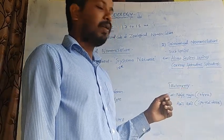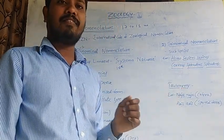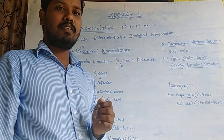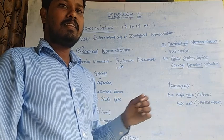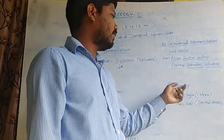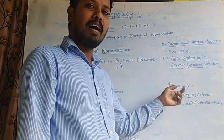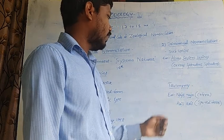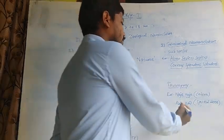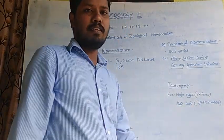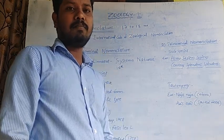In trinomial nomenclature, as an extension of binomial nomenclature, the three-worded name includes genus, species, and subspecies — genus starts with a capital letter while species and subspecies start with small letters — all in Latin or Latinized forms printed in italic type. Examples include Homo sapiens sapiens and Corvus splendens splendens. Tautonymy is the practice where the generic name and species name are the same, as in Naja naja and Axis axis.